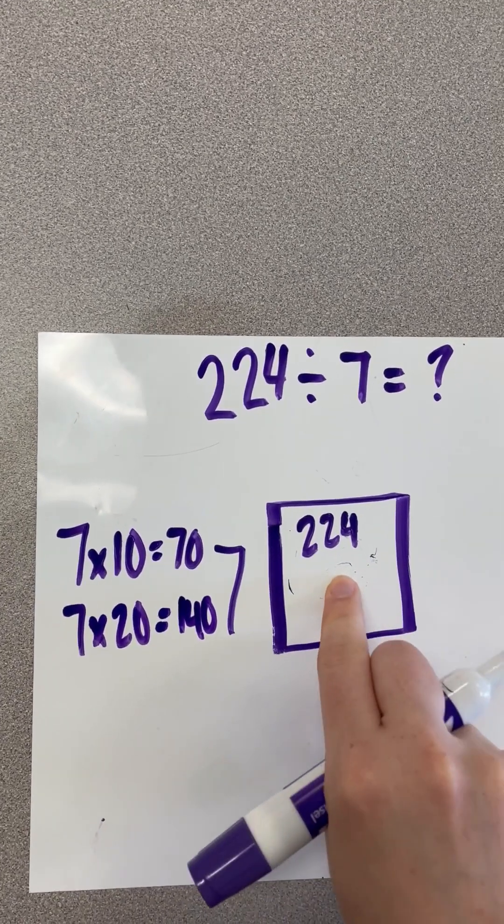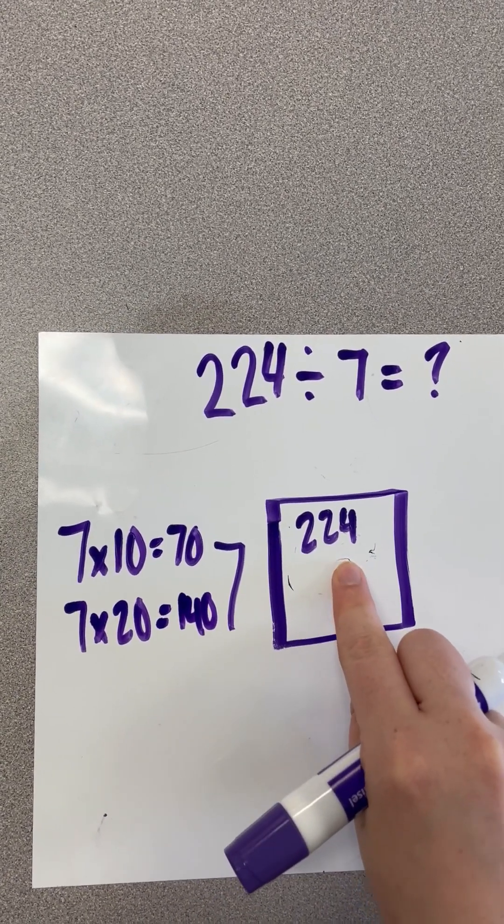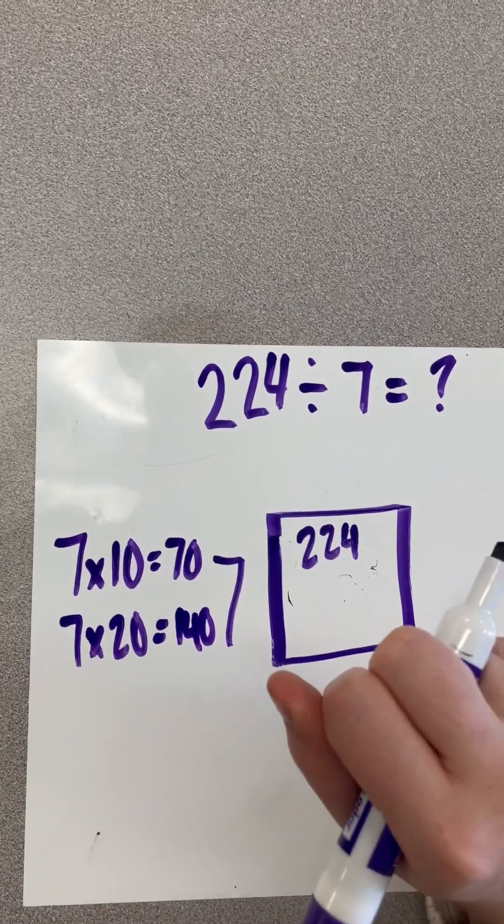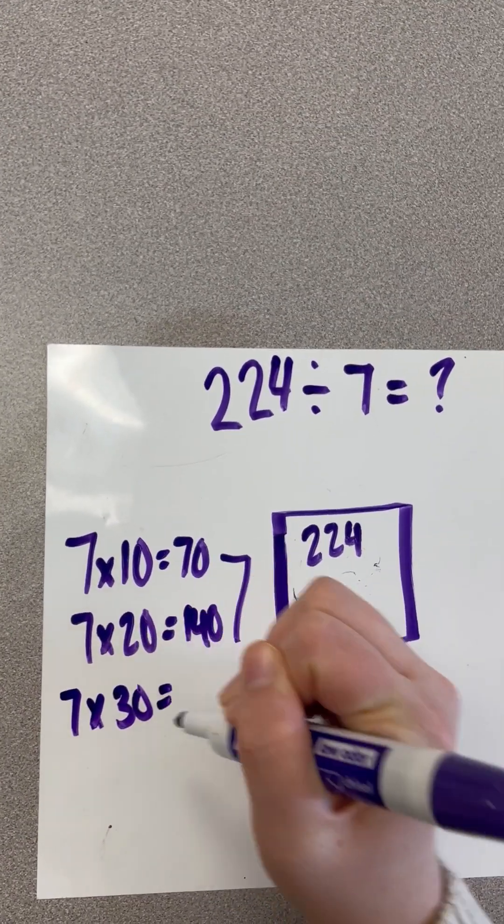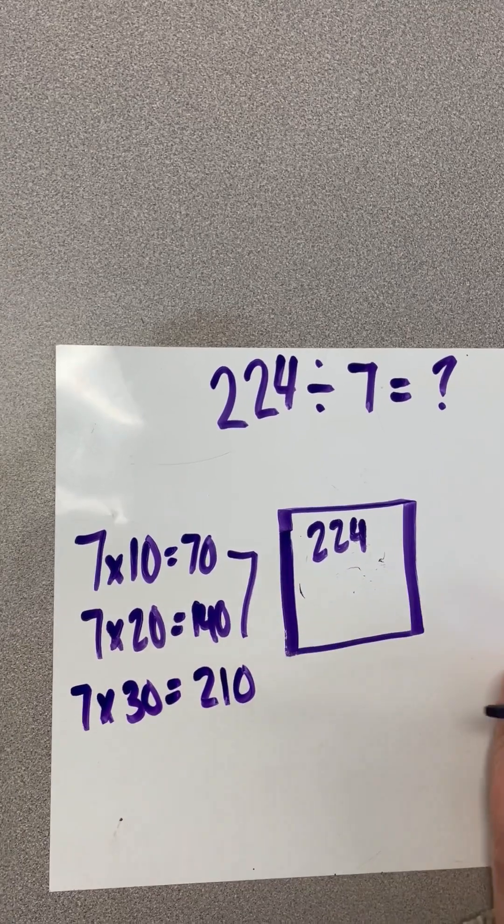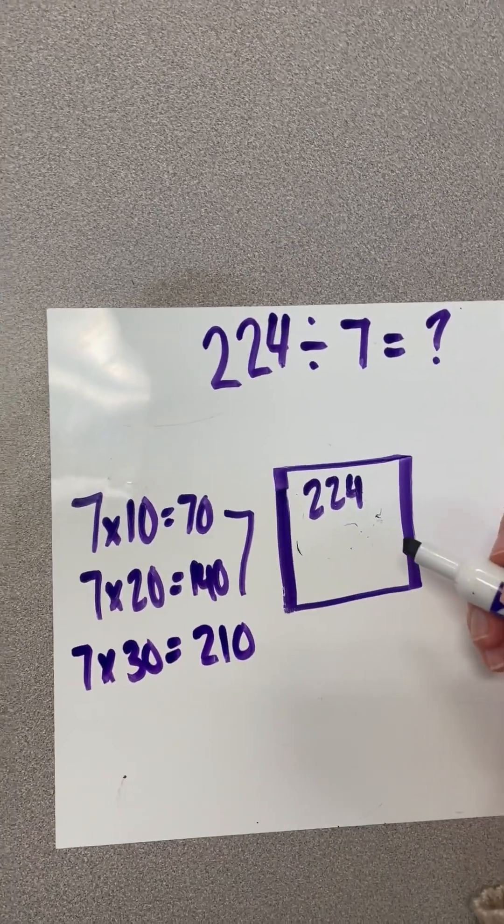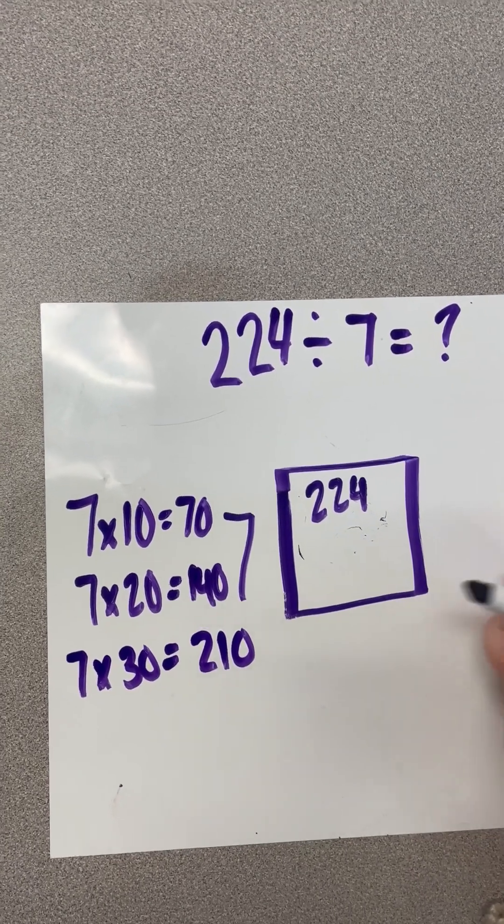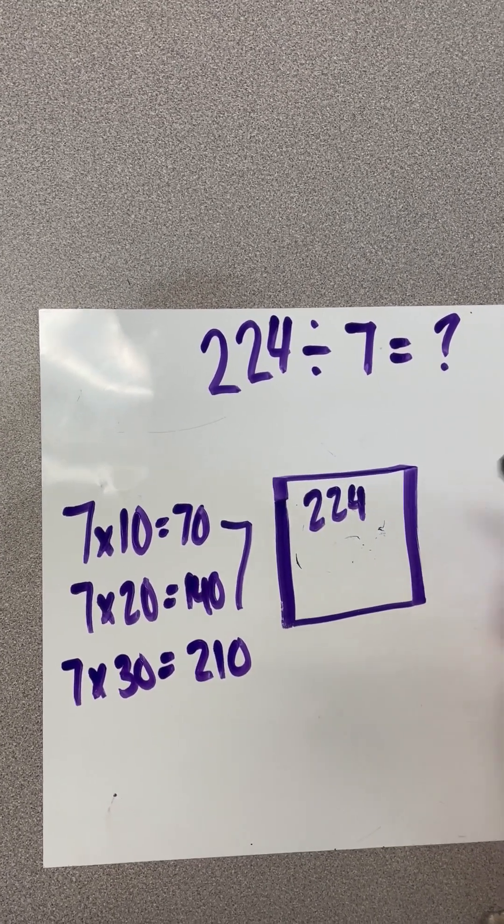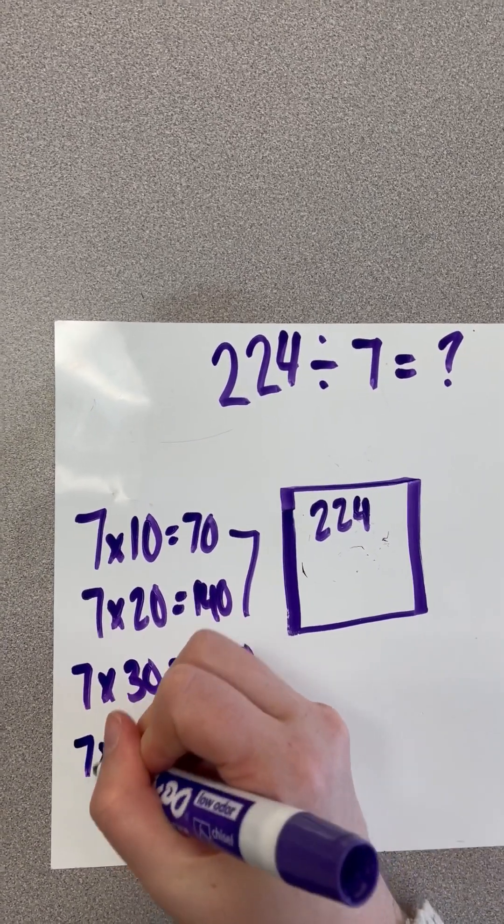Well, we got closer, but there's probably a chance we can get even closer to that. Let's move on to 7 times 30. And that would be 210. Now we've gotten pretty close. But I'm going to go ahead and check my next multiple of 10, just to see if it would still get us anywhere closer without going over.